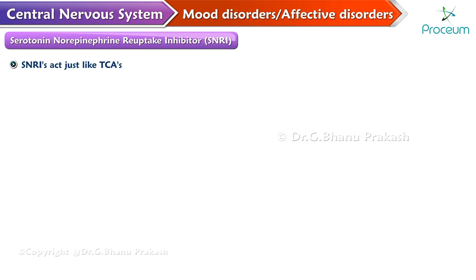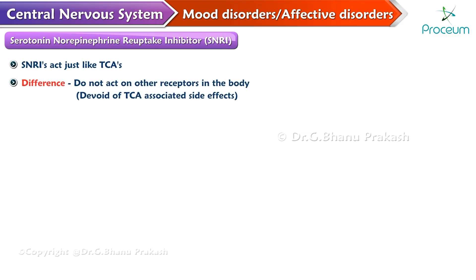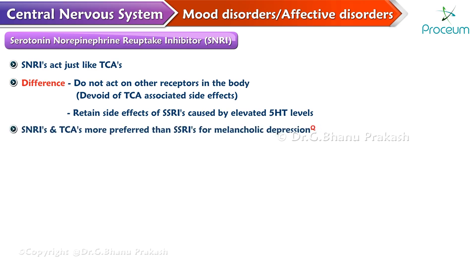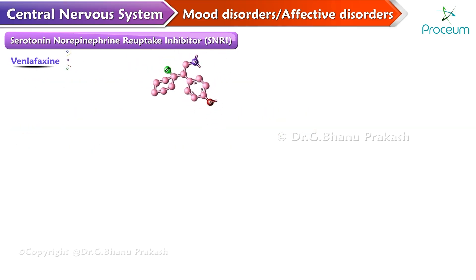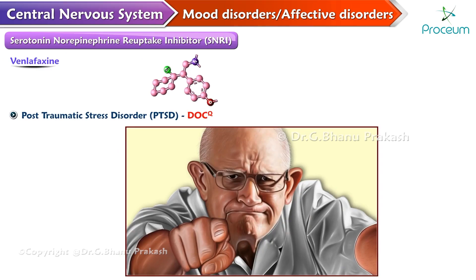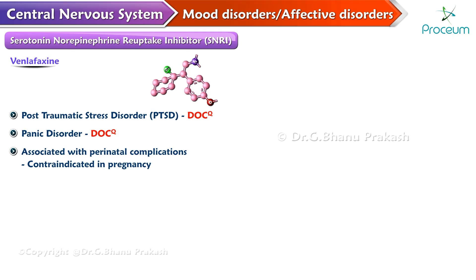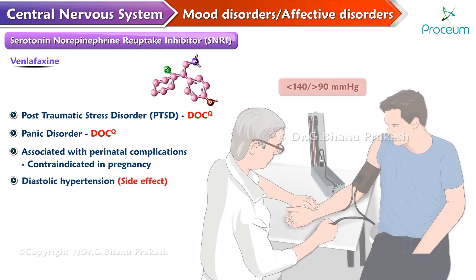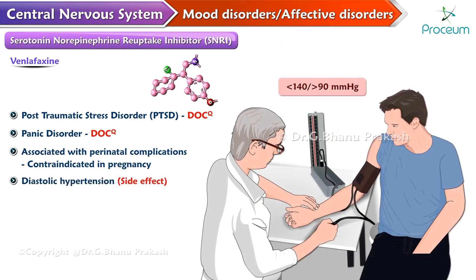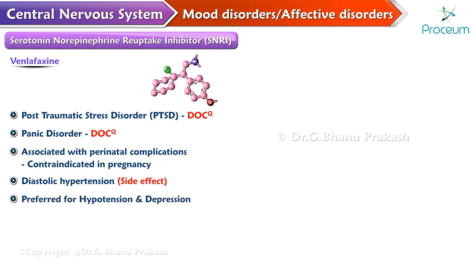The SNRIs act just like TCAs with the only difference that they do not act on other receptors in the body, and hence are devoid of TCA-associated side effects. However, they retain the side effects of SSRIs caused by elevated serotonin levels. The SNRIs and TCAs are more preferred than SSRIs for treatment of melancholic depression. These drugs are used as second-line drugs in depression after SSRIs. Venlafaxine is used for post-traumatic stress disorder and panic disorder. It is associated with perinatal complications and hence should not be used in pregnancy. Diastolic hypertension can be seen with venlafaxine, and hence it should be preferred in patients with hypotension and depression.